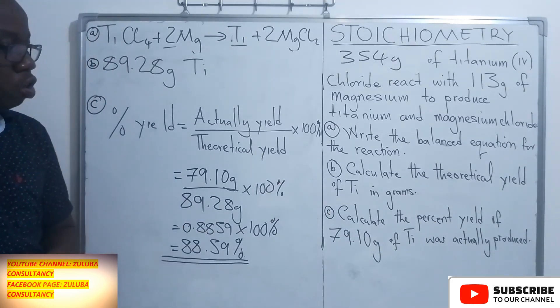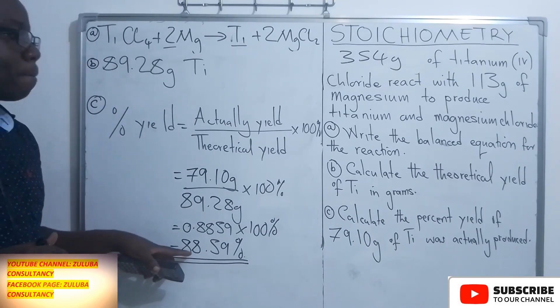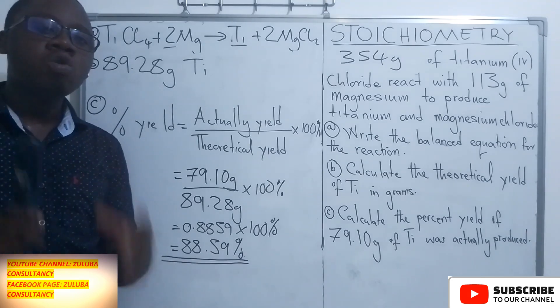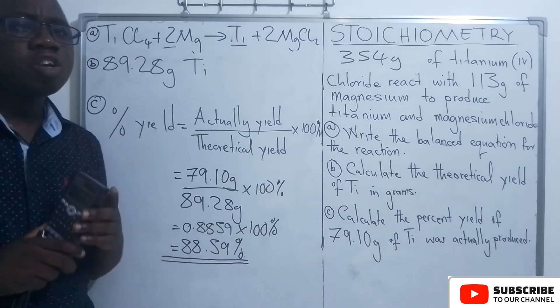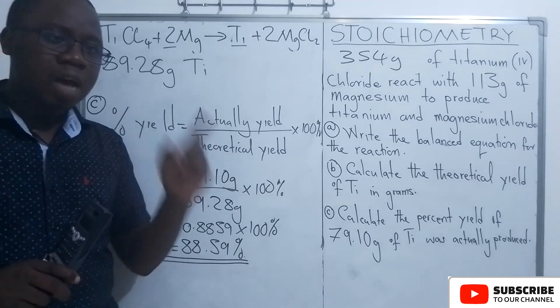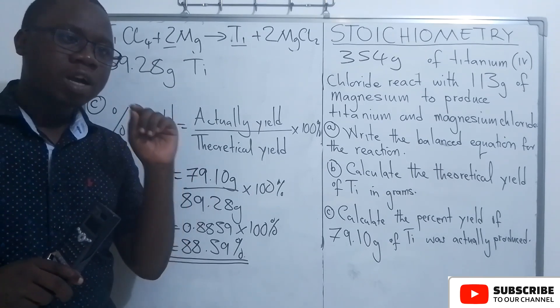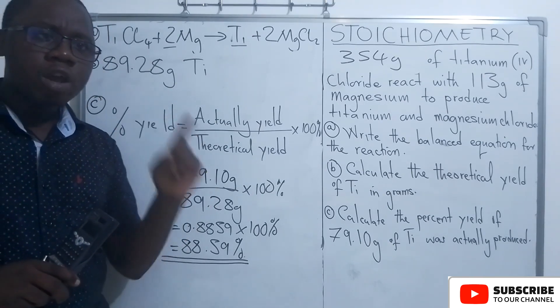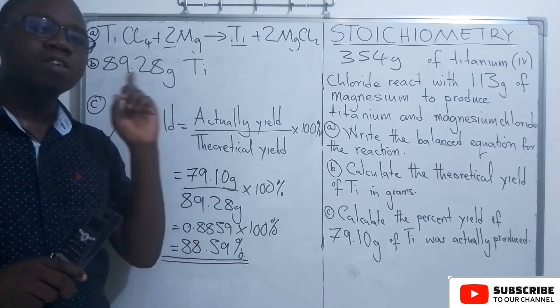Now what you need to notice or to understand is, the percentage yield should not be more than 100%. If the percentage yield is more than 100%, then there is somewhere where you made the wrong calculations, or it could be you made a wrong balanced equation.